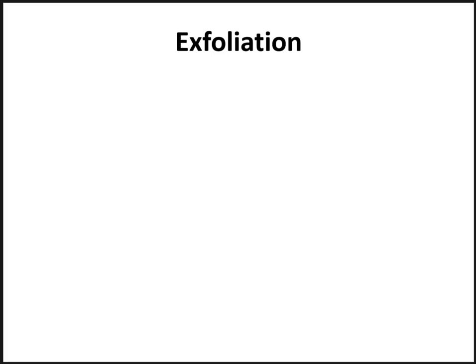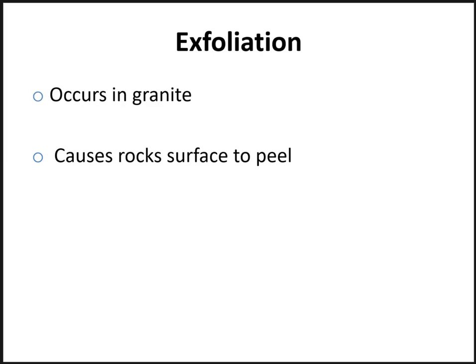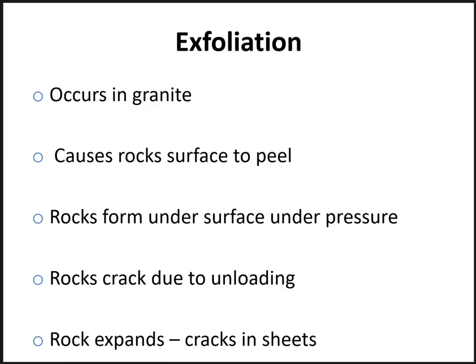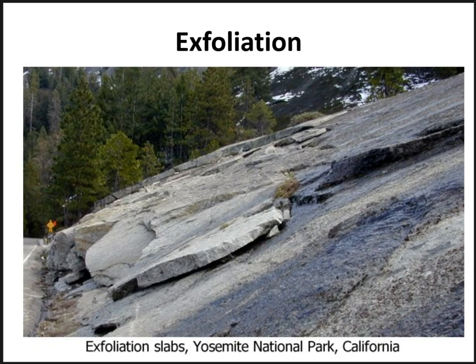The last type of mechanical weathering is exfoliation, which generally occurs in granite and related intrusive rocks. In exfoliation, rocks weather by peeling off curved sheets rather than grain by grain, with sheet thickness ranging from a few millimeters to several meters. It is believed that rocks forming under great pressure crack in a process called unloading when that pressure is released through tectonics, isostasy, or erosion. As the rocks expand, the outer layer breaks free in sheets. Here is an example of exfoliation in Yosemite National Park.